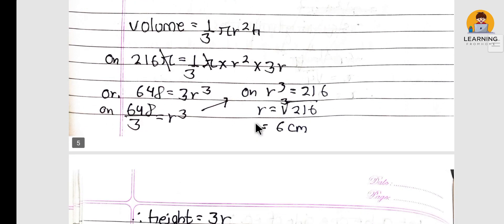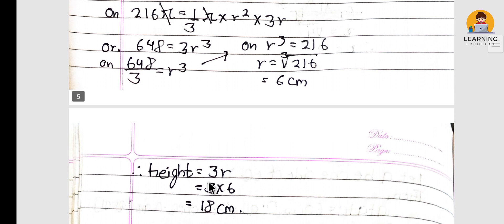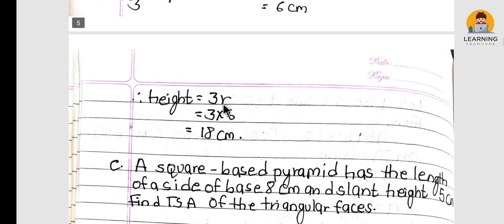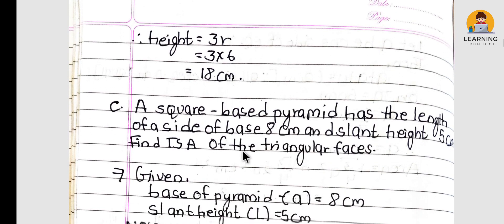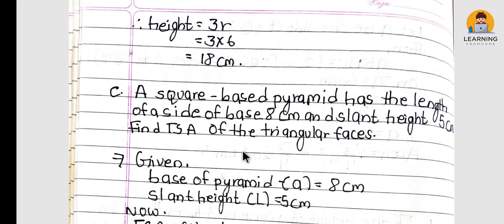We have height h = 3R. Solving using the volume formula, we find radius R = 6 cm and therefore height = 3 × 6 = 18 cm. Next question is on a square base pyramid.